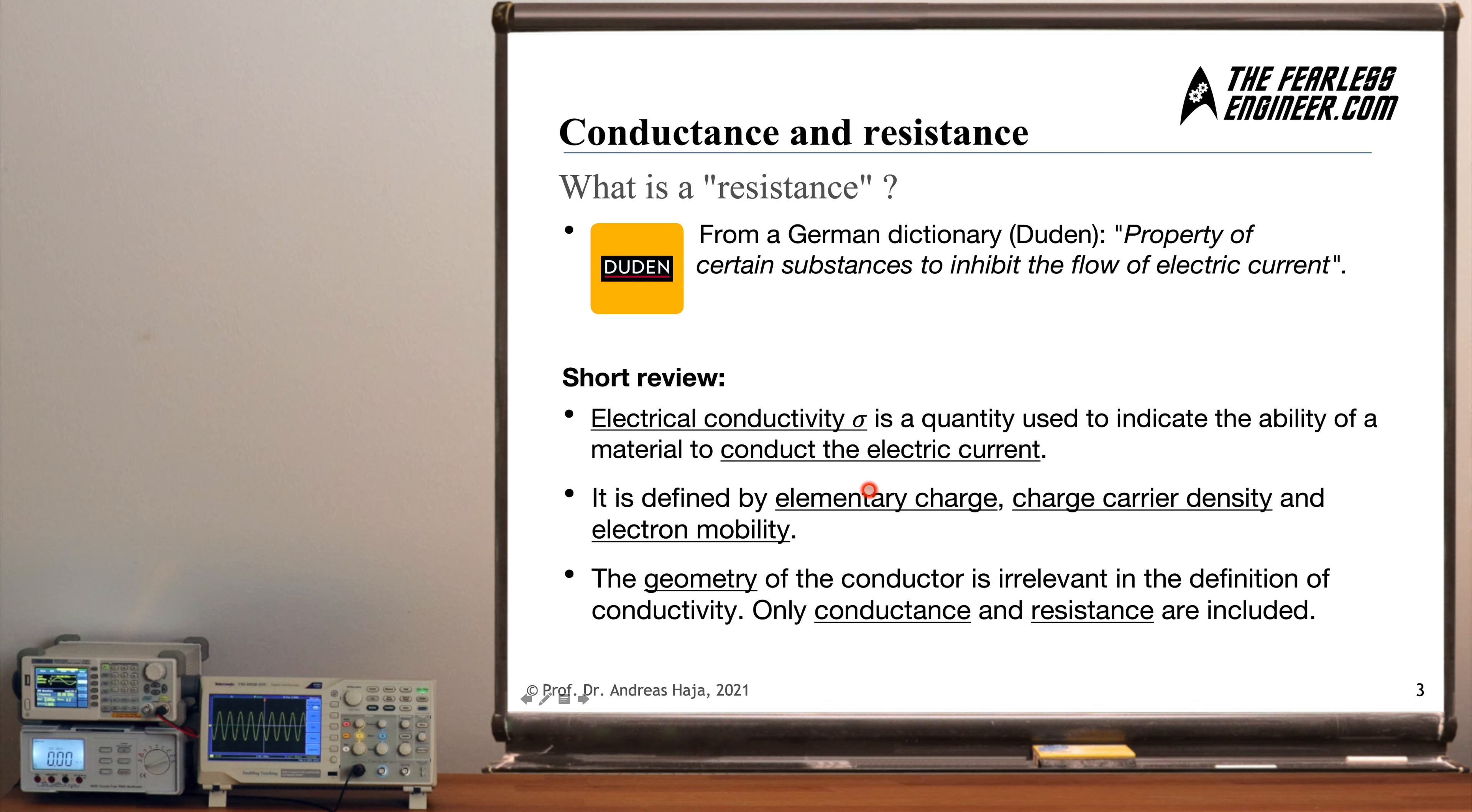The geometry of the conductor is irrelevant in the definition of conductivity. Only conductance and resistance are included. Up until now we have only looked at these parameters in order to describe the properties of a certain material, but we have not yet considered the shape of the material. For example, if we consider a copper wire, this is a very thin and long cylinder, a cylindrical shape. By including the geometric properties, for example cross-section area and length, and by combining it with the conductivity sigma, we arrive at the definition of resistance. This is the aim of this video here, to add to our concept of conductivity the geometrical properties of the material which we want to observe.